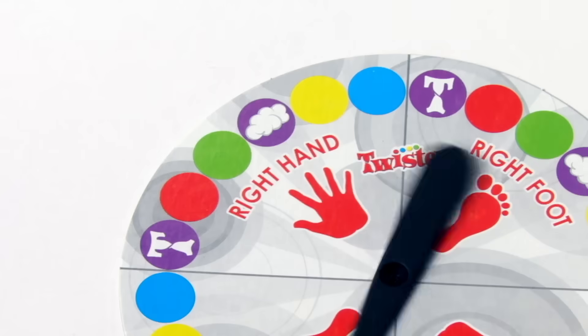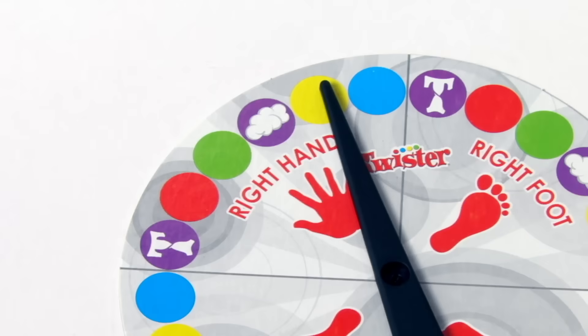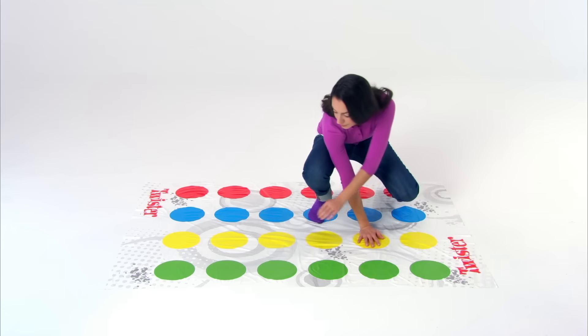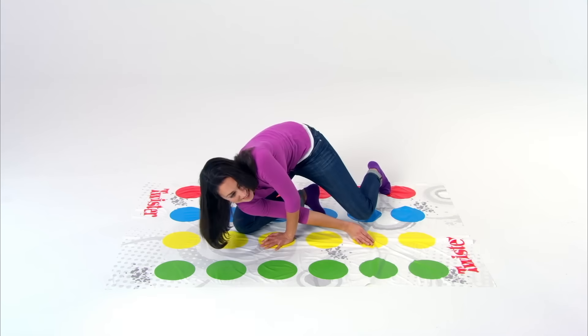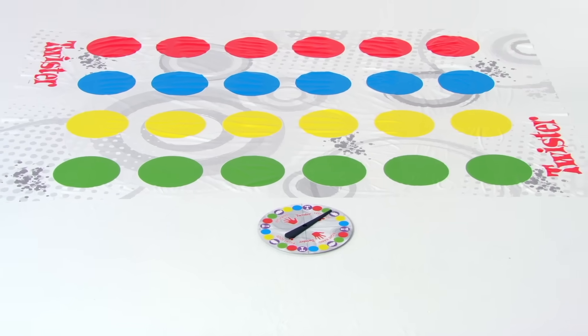Give the spinner a whirl and see what's next as you try to keep your hands and feet on the mat. If your knee or elbow touches the mat or you fall over, you're out. Be the last player standing to win!